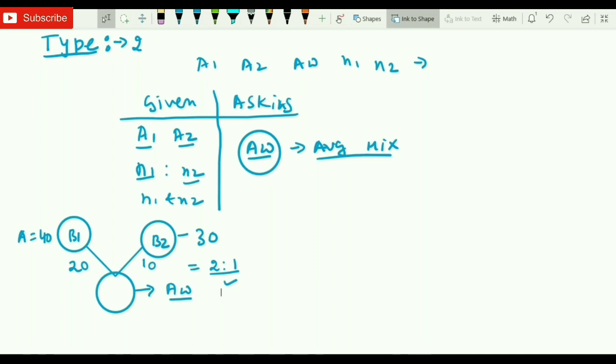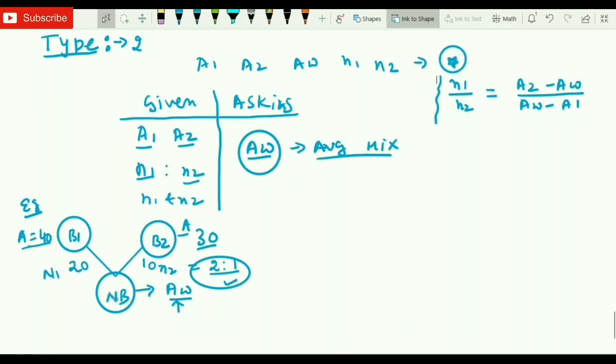Just an example for you to understand. If you have not attended Type 1, don't worry, this is entirely different from Type 1. Only thing I'll be using is the relationship. What is the relationship? N1 by N2 will always equal to (A2 minus AW) divided by (AW minus A1). So how do you remember it? Let me tell you first. I want you to remember this diagram, don't remember the formula. This is difficult, you may get confused, but I can say everyone will remember the diagram. The first one is A1, the last one is A2. And if I'm not wrong, between this will always be the mixture. This is how I'll write.